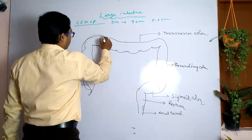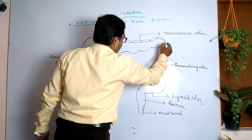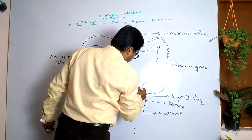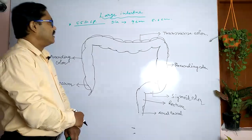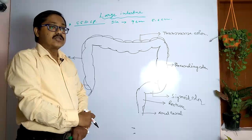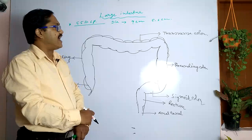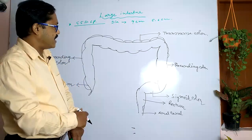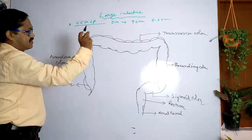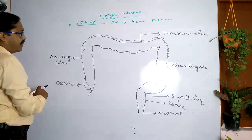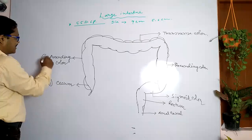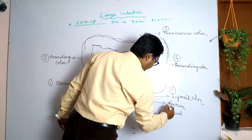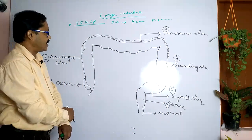The large intestine is partly retroperitoneal — some parts are attached with the dorsal side of the body with no peritoneal membrane, and some portions are attached with the peritoneum. The six parts of the large intestine are: cecum, ascending colon, transverse colon, descending colon, sigmoid colon, and rectum.